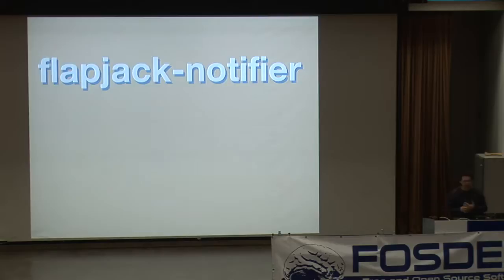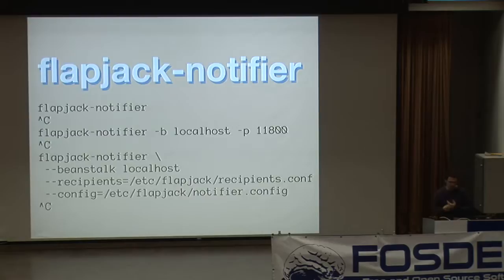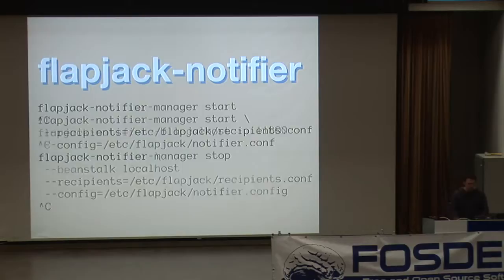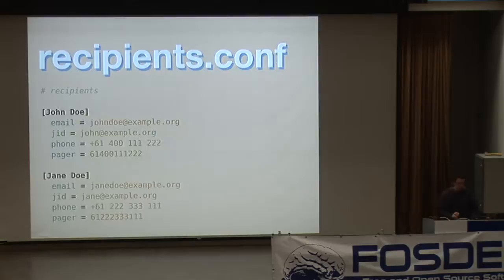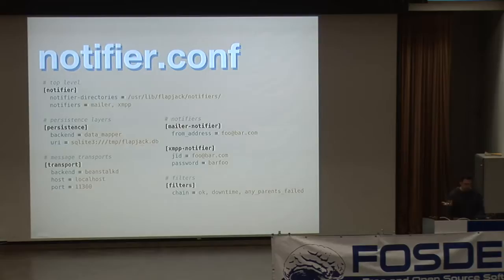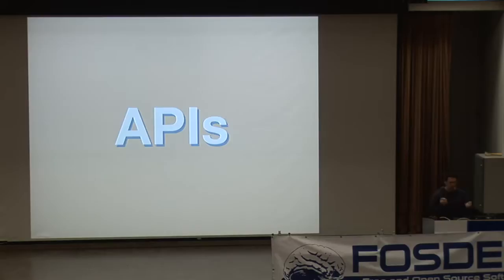The next part of the system — and probably the coolest part — is the notifier itself. The notifier works just like the workers: it starts up and attaches to the console with a few more configuration options, and you have the manager as well. There's a recipients configuration file which will eventually probably be moved into a database, but it's very simple — you specify a bunch of stuff there and all this information is made available to the notifiers when they decide they need to notify. Then there's the notify configuration which sets up various things inside Flapjack.